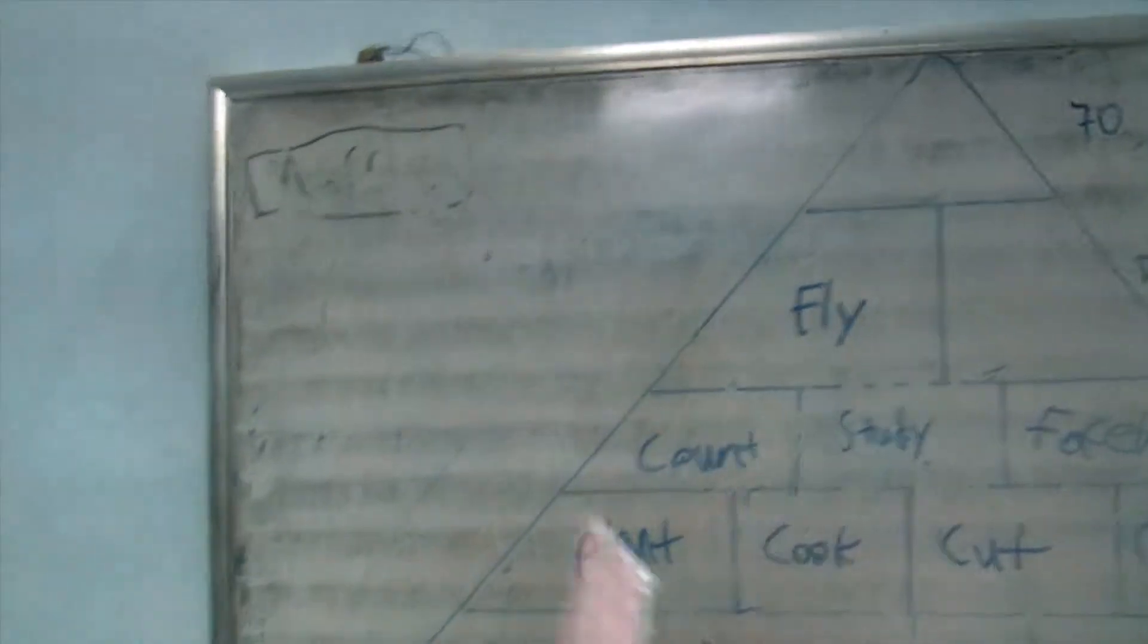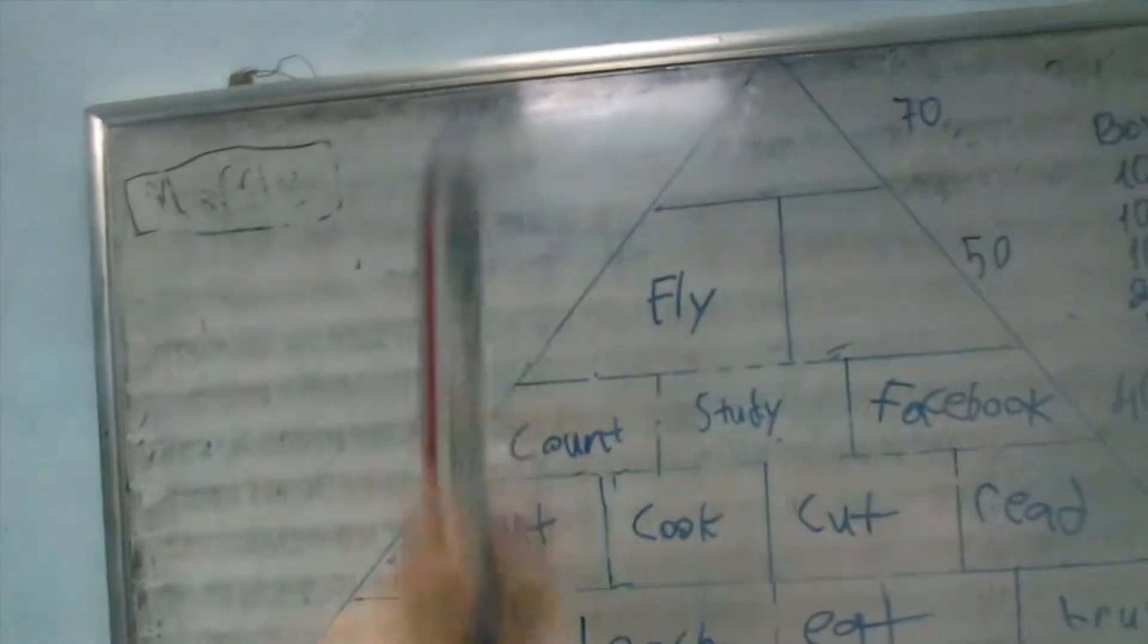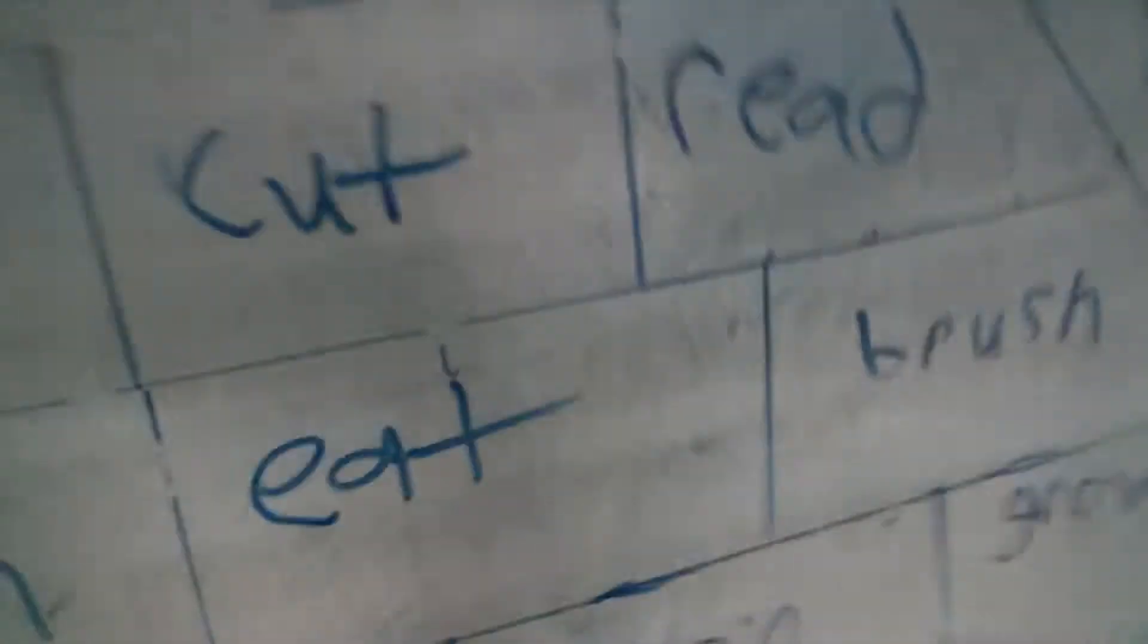We got words like fly, count, study, Facebook, like Google, plant, cook, cut, read, drink, teeth, eat, brush, hop, bite, dance, sleep, grow.